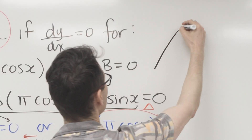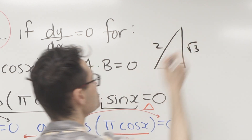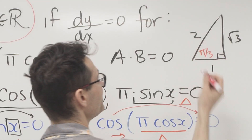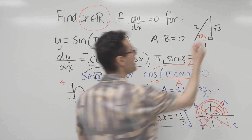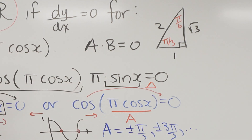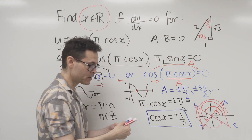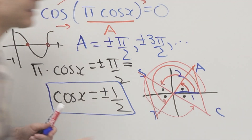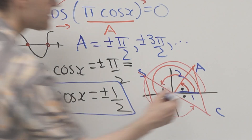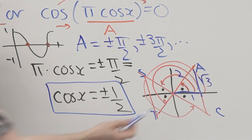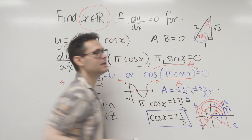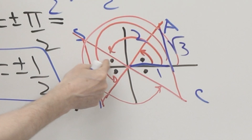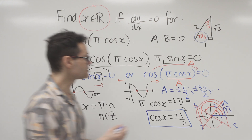The special triangle has sides 1, 2, and √3 — the 30-60 triangle. In radians, the 60-degree angle is π/3 and the 30-degree angle is π/6. Since cos(x) = 1/2, the x-coordinate is 1 and the radius is 2, making the missing side √3. Across from √3 gives the reference angle π/3 — the angle formed between the x-axis and the terminal arm.